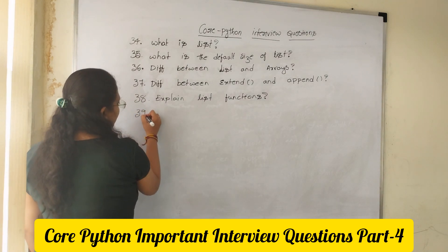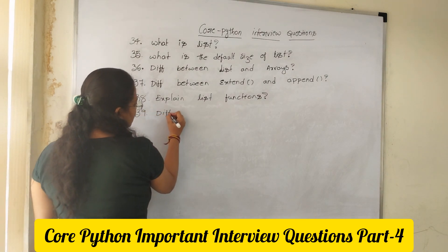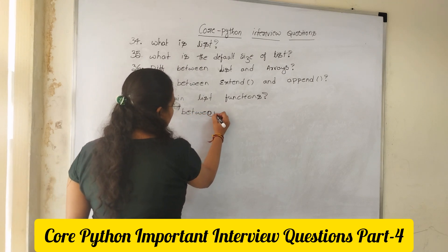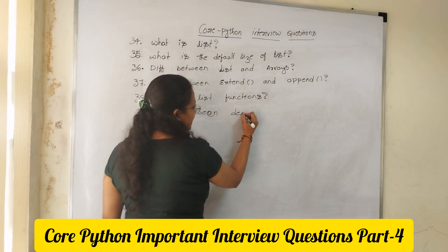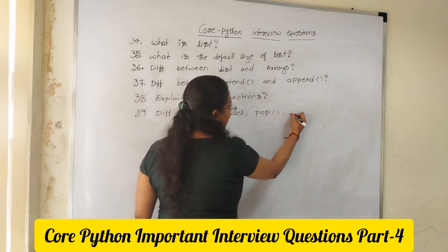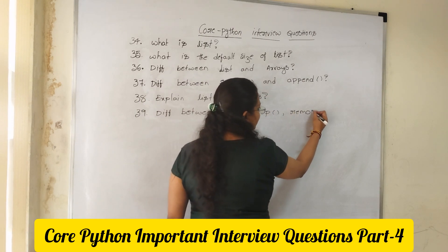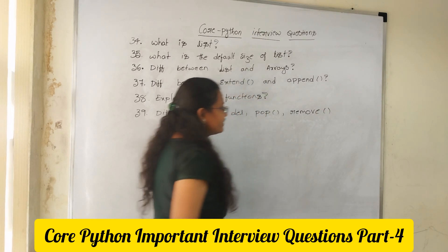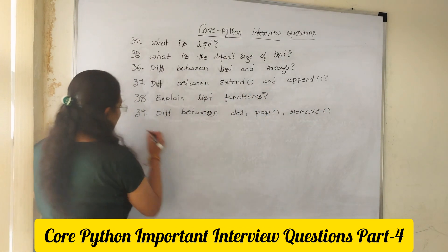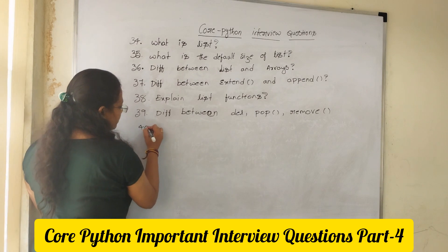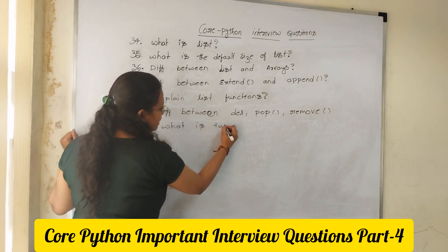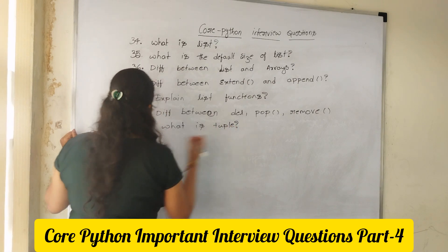Question 39: Differentiate between del, pop, and remove. This is very, very important — you need to differentiate between del, pop, and remove. Question 40: What is tuple?